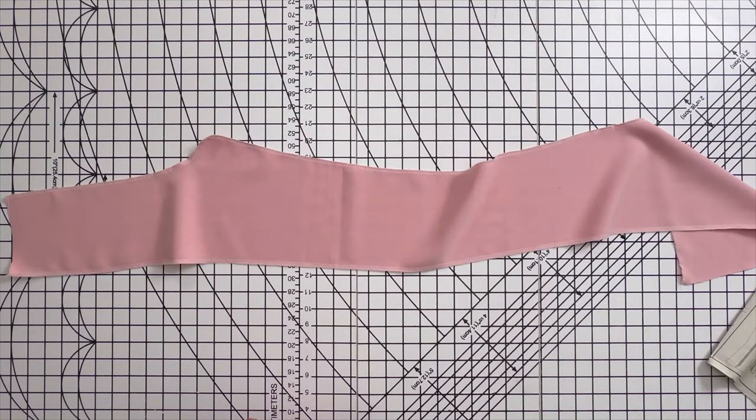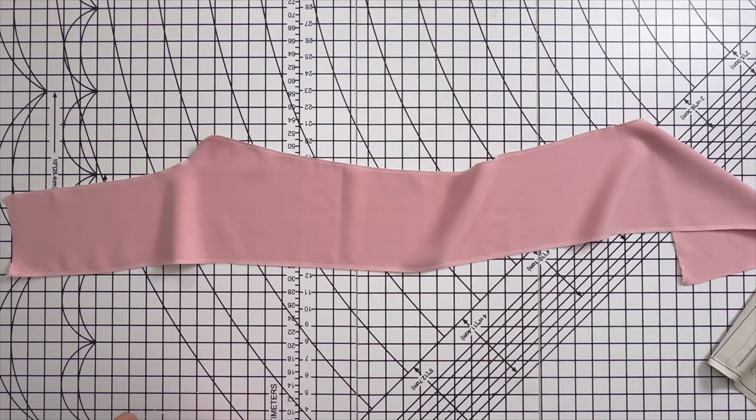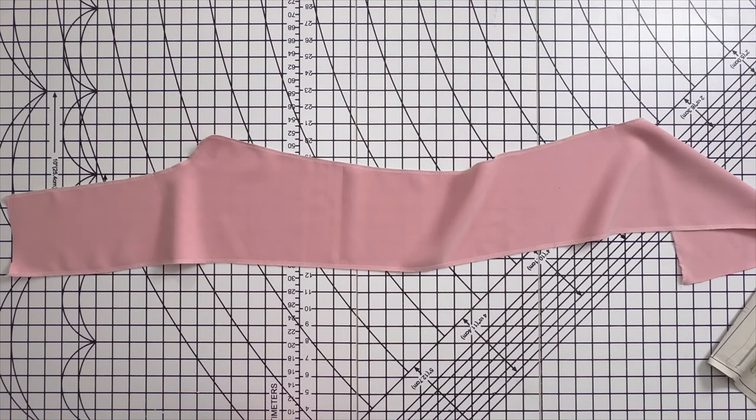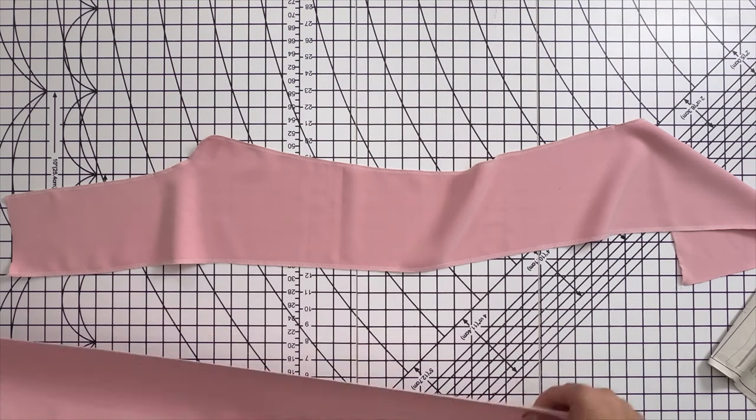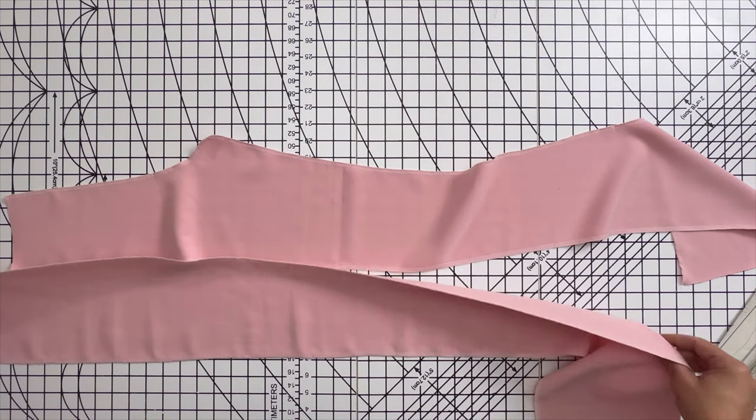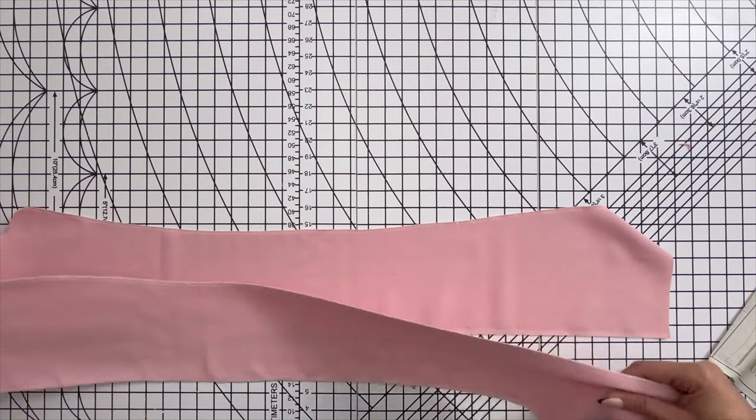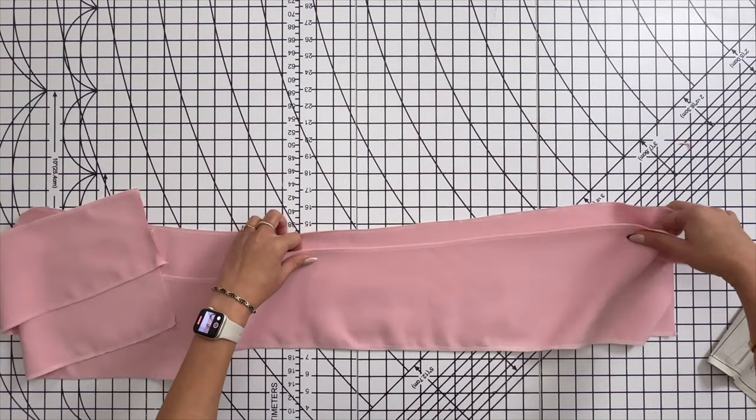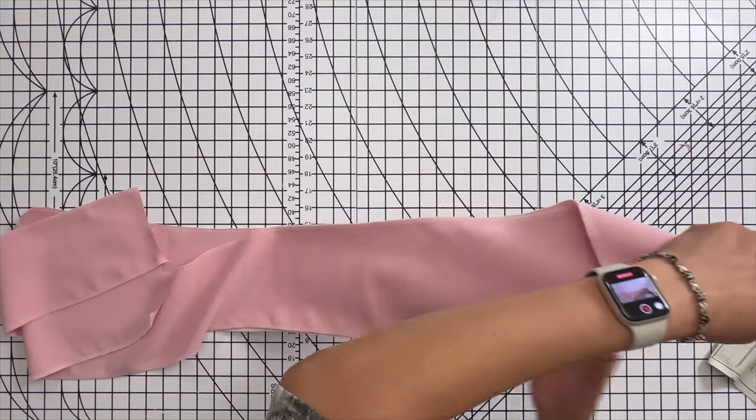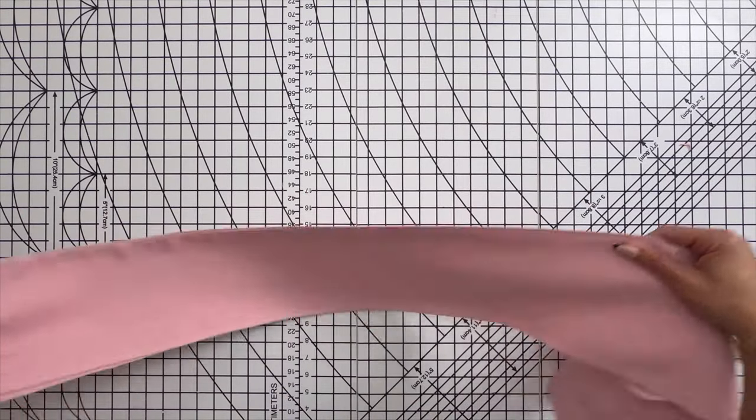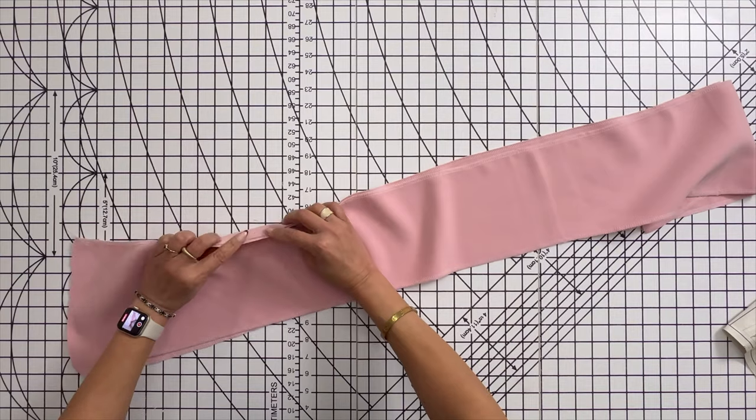You should have everything cut out and all of your markings and notches marked and your interfacing on your waistbands. We're gonna start off with pieces 23 and 24 and with right sides together pin everything in place and take it to the sewing machine. Make sure that you are marking your dot for where your center front slit will be on the pants.